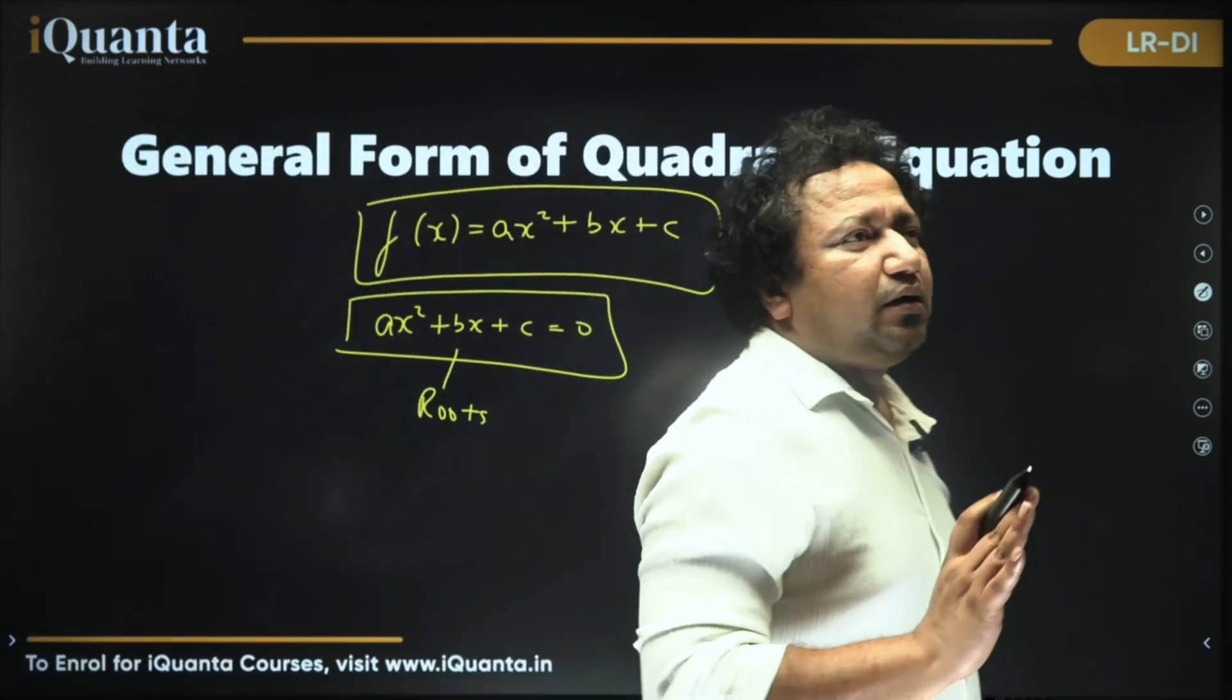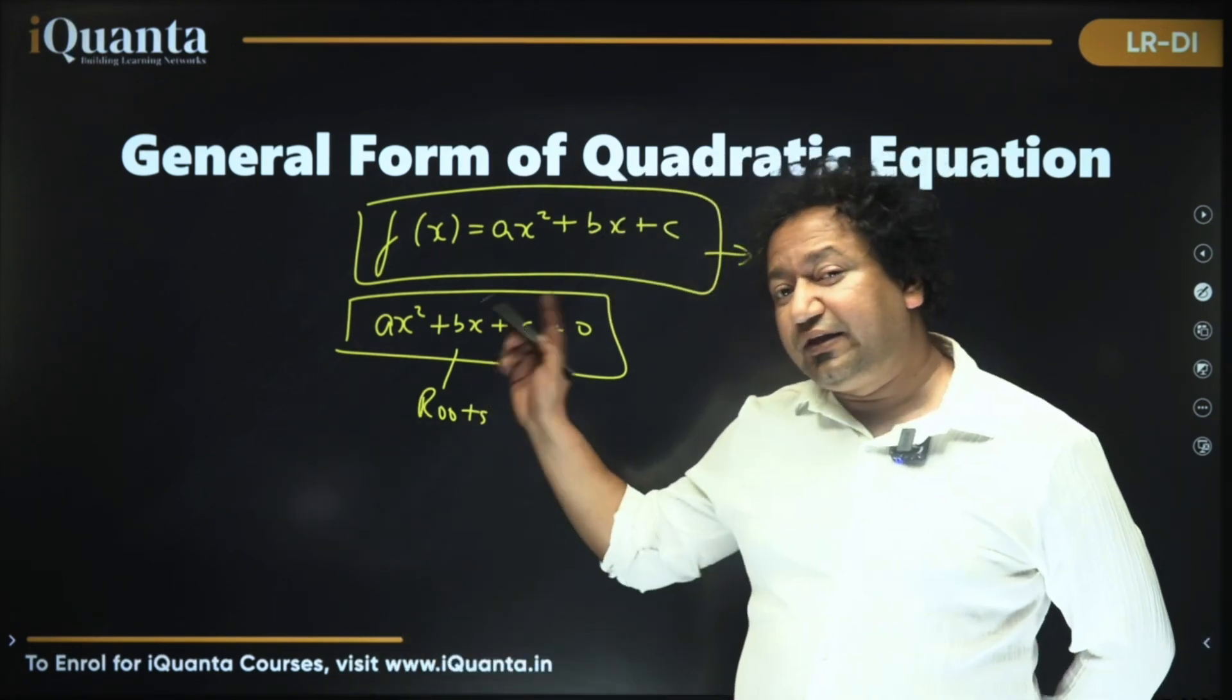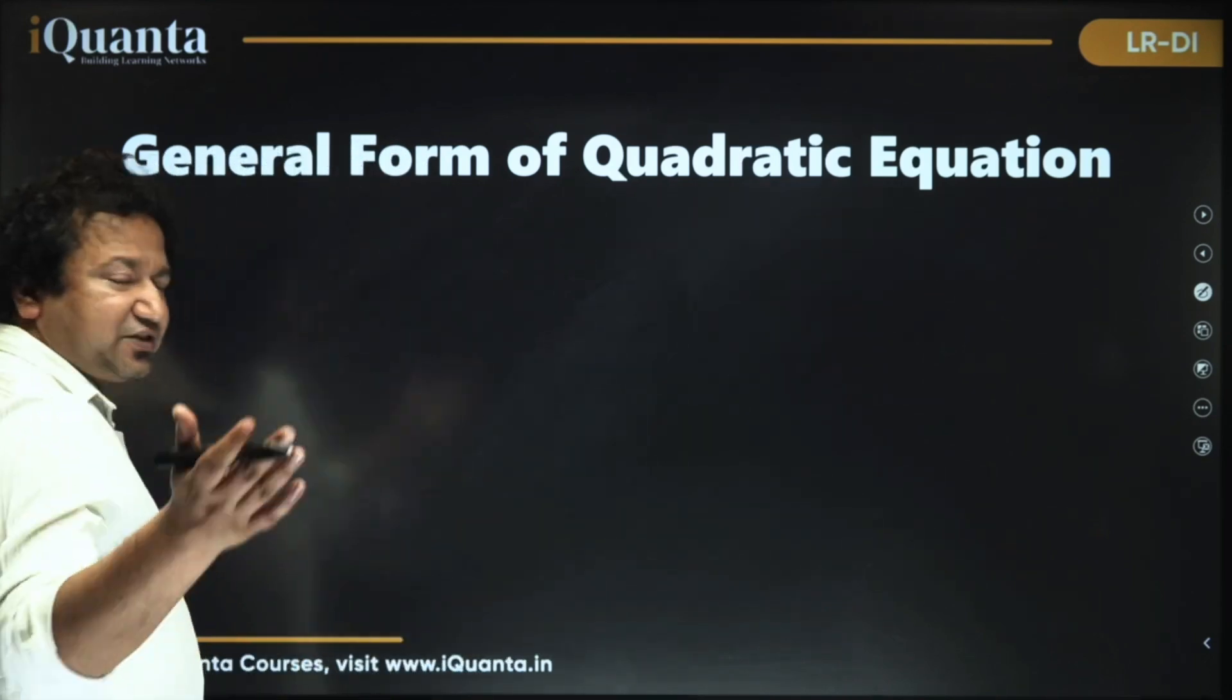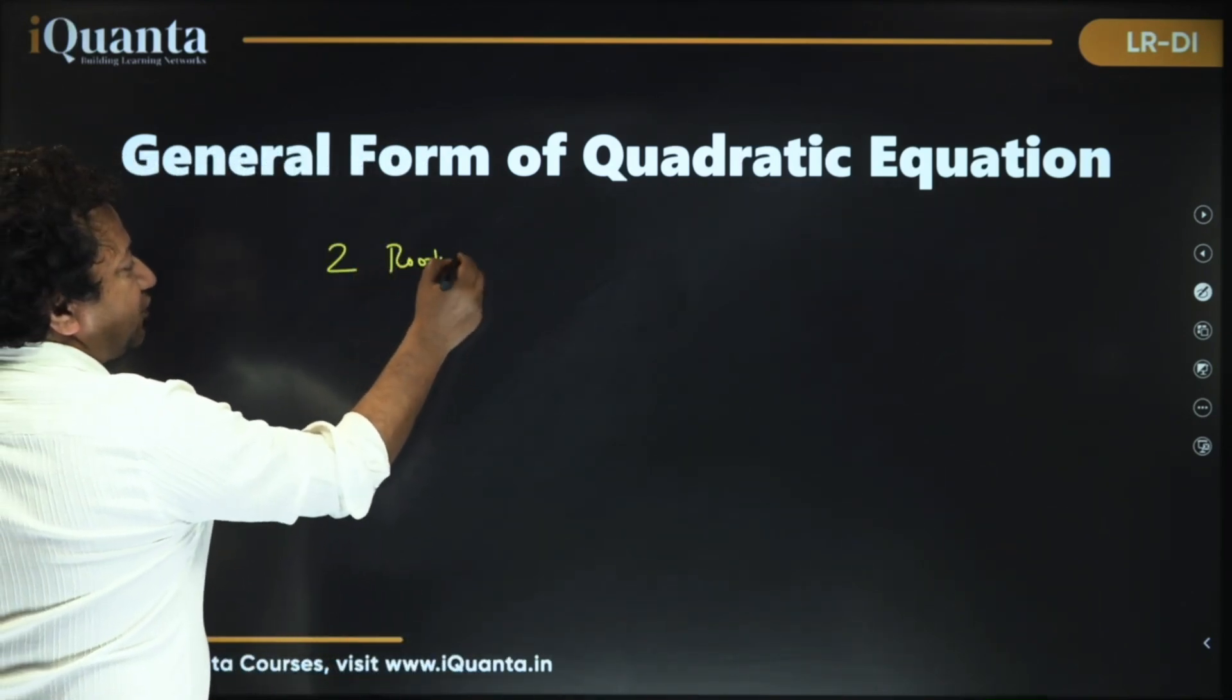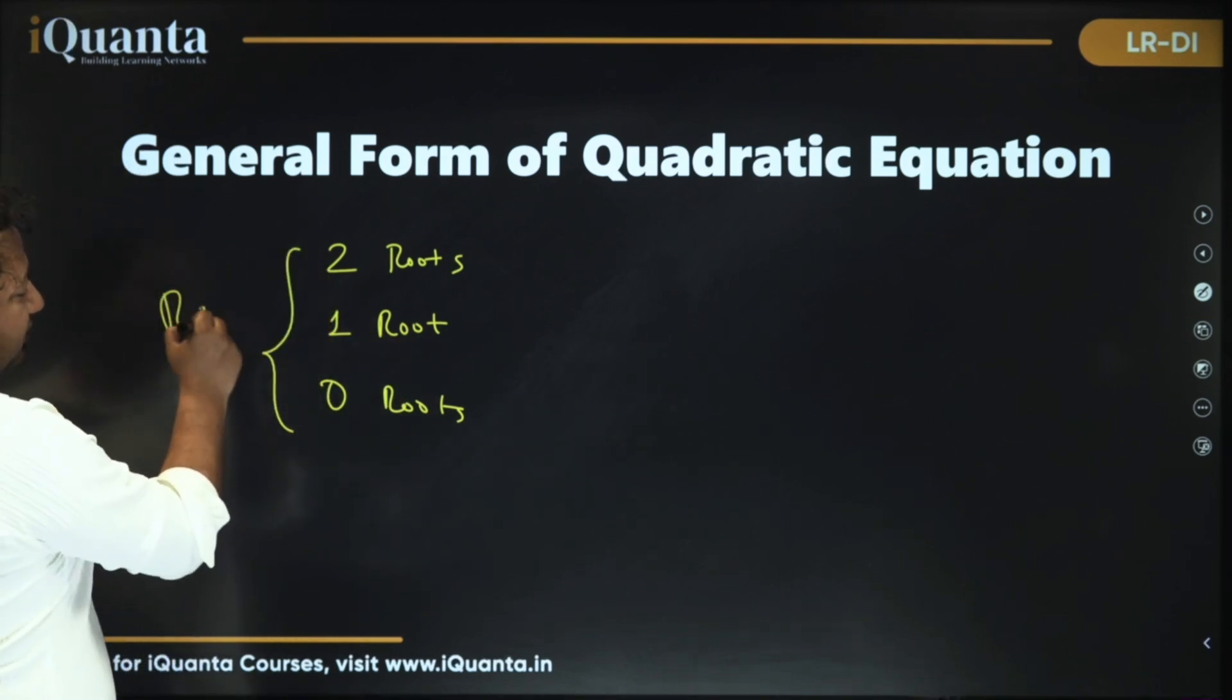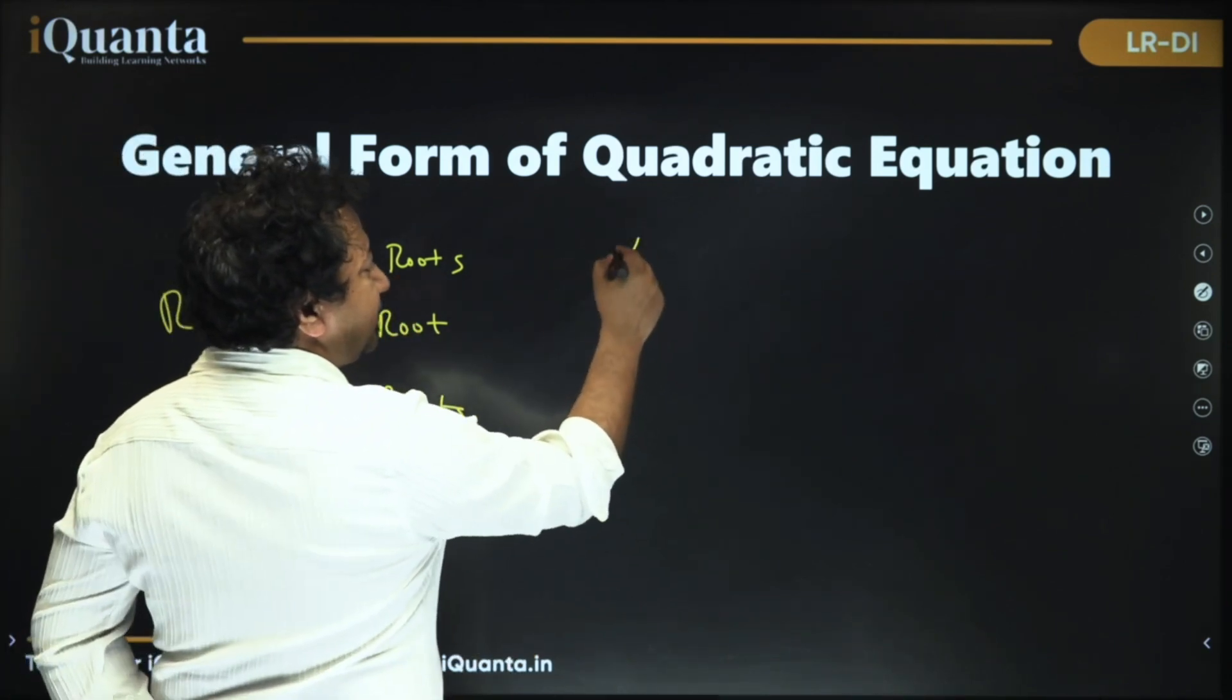Moreover the number of roots would at max be equal to the degree of the equation. Here degree is 2 so at max we can have two roots. That means we can have two roots or we can have one root or we can have zero roots. What kind of roots? Real roots. So in a way we can also interpret it to be when they have two roots we can say those two roots are distinct. Alpha, beta they're distinct. They're not equal.